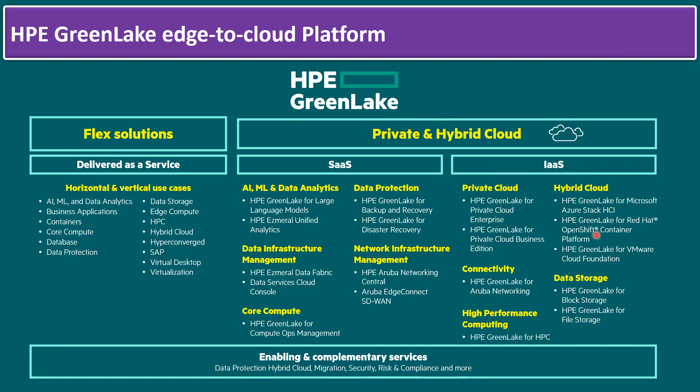Whatever infrastructure customers use, common solution blocks include HPE Compute, HPE Network (Aruba Networking), HPE Storage (for example, Alletra), and HPE security solutions. On top of that, you can choose hybrid cloud options like Azure Stack, Red Hat OpenShift, or VMware VCF. For dedicated private cloud, you can propose HPE GreenLake for Private Cloud Enterprise or, in some scenarios, the Private Cloud Business Edition.